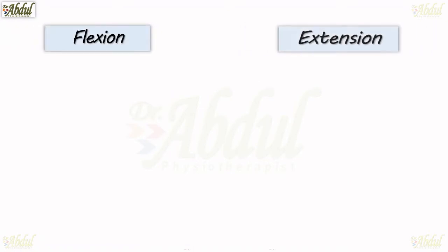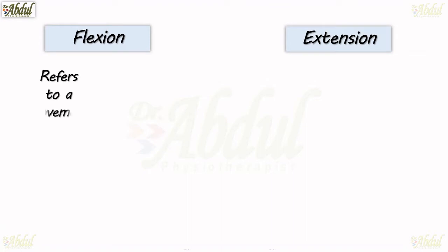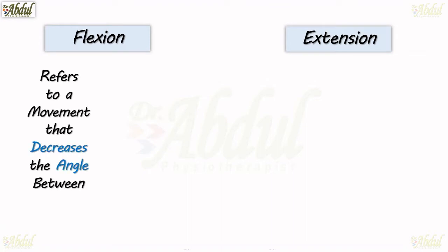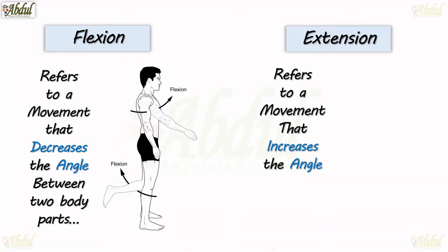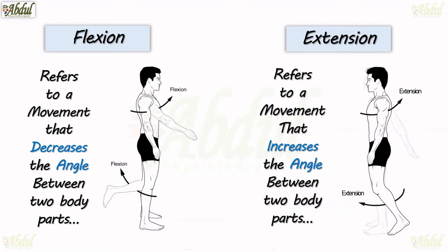Let's begin with the movement flexion, and its antagonistic movement is extension. Flexion refers to a movement that decreases the angle between two body parts — like this, in the arm and the leg. Extension refers to a movement that increases the angle between two body parts. It looks like this — extension of the arm and the leg.